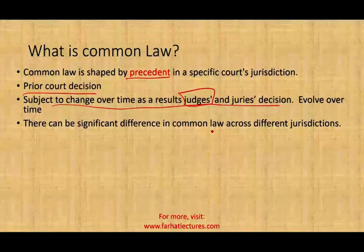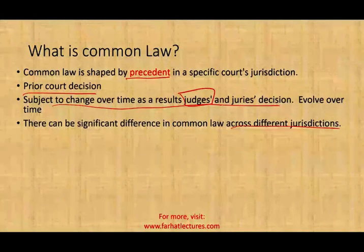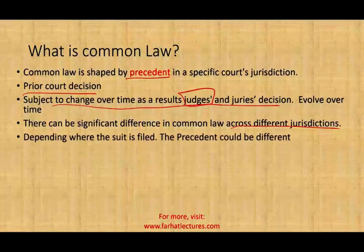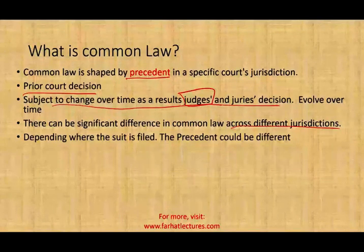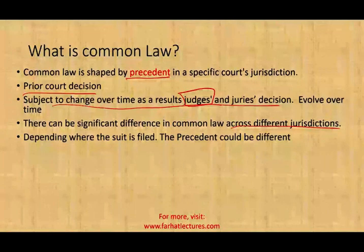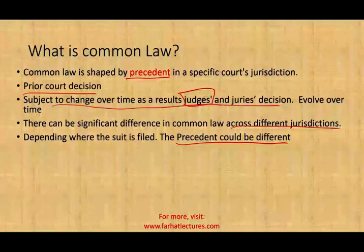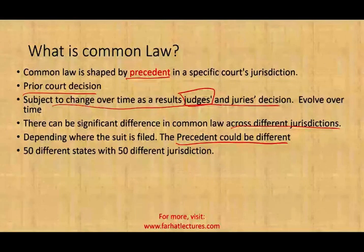There could be significant differences in common law across different jurisdictions. Each state has its own court system, so we could have different laws among different states. This is important because depending on where a suit is filed against the auditor, the law will differ. For example, Pennsylvania law is different from New Jersey law. With 50 states, you could have 50 different jurisdictions with 50 different laws.